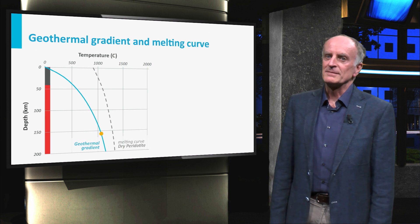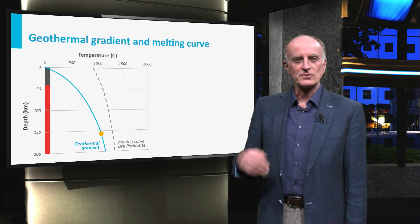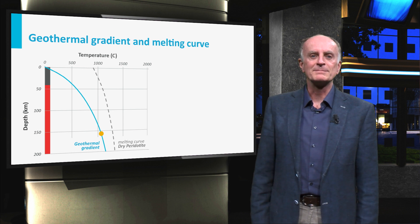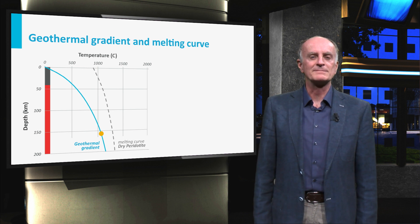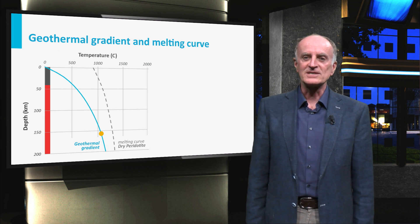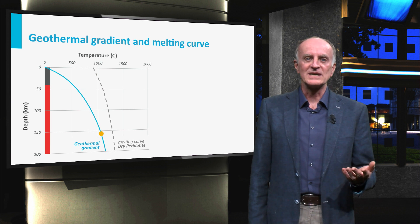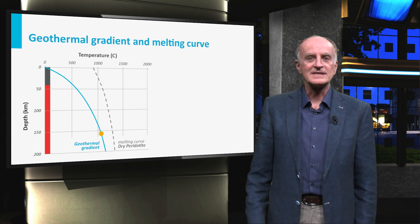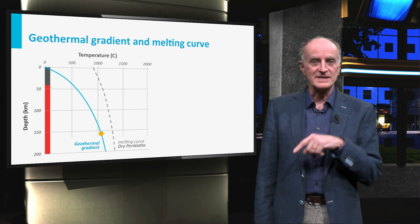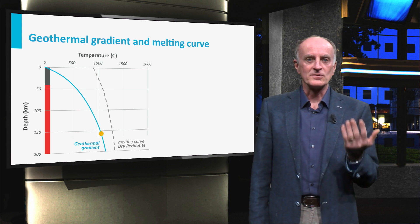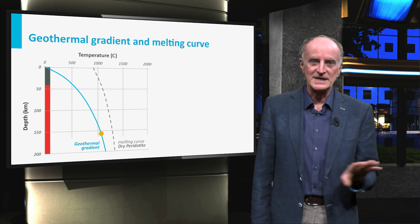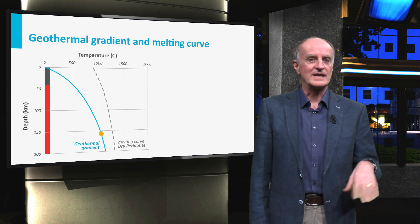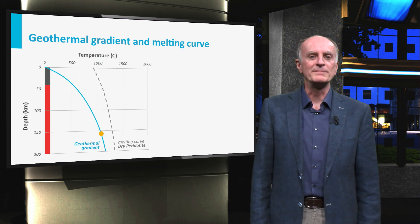In this diagram you see two curves. The geothermal gradient indicates temperatures found at different depths in the Earth. The dashed curve shows the temperatures at which typical mantle rocks melt. As you can see, temperatures are lower than melting temperatures, which means that rocks are solid and no magma is generated. How can we bring then a rock to melt?